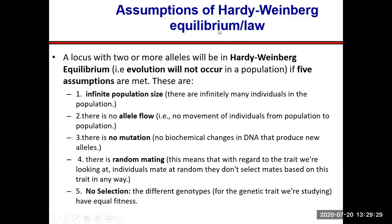There are five assumptions for Hardy-Weinberg equilibrium to exist. If these five assumptions are met by a population, there is no evolution occurring in that population at that time. Hardy-Weinberg equilibrium is exactly opposite to evolution — if one is occurring, the other cannot. So what are those five requirements for a population to not be undergoing evolution?